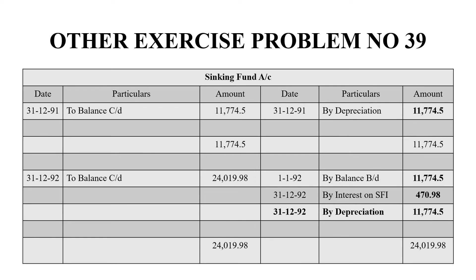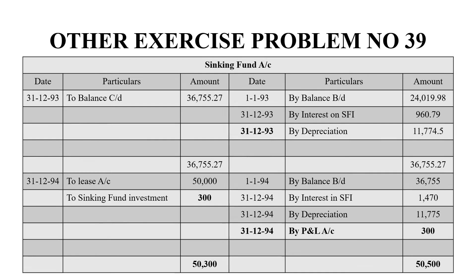Normally in a depreciation journal entry, it is depreciation account debit to asset account. But here we have depreciation account debit to sinking fund account. That is why we invest in the depreciation value of rupees 11,774.50. That is 31/12/91 by depreciation. We carry down the balance, and in the next year the interest amount of rupees 470.98 is credited. The total sinking fund account balance becomes rupees 24,019.98 with a grand total of rupees 24,019.98 on both sides.